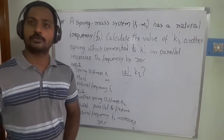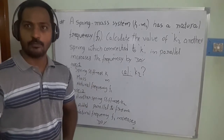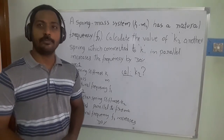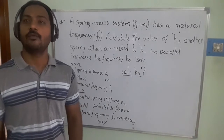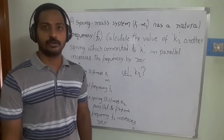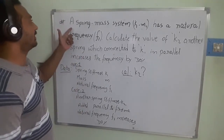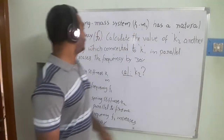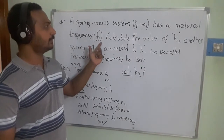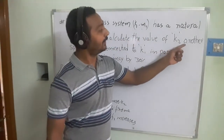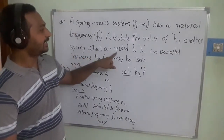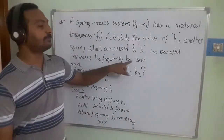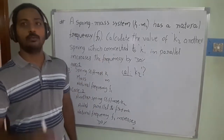Good morning all. In today's lecture we are going to solve one more problem related to free longitudinal vibrations. As we know, when the system is vibrating along its own longitudinal axis, that is the free vibration of the system. The problem is: a spring-mass system with stiffness k1 and mass m has a natural frequency f1. Calculate the value of k2 when another spring connected to k1 in parallel increases the frequency by 30%.